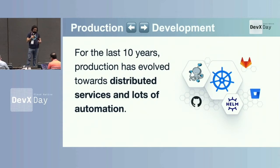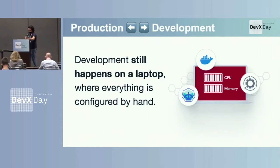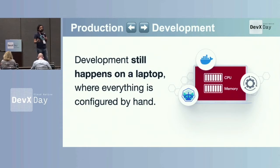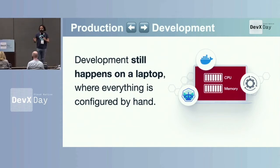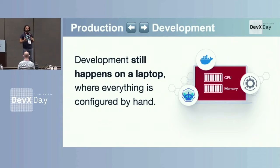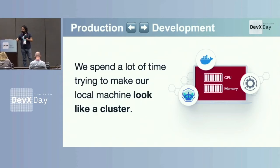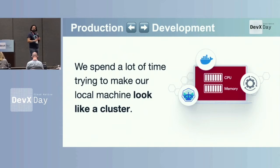However, development still happens on a laptop. As we at Okteto talk to more of our customers, we keep seeing a lot of teams spend a lot of resources trying to make their local machine look like a cluster. This is the approach we've all taken for a long time — Docker Desktop, Kind, K3S, Minikube — but as we heard in previous talks, there are a lot of resources invested here. Your application isn't quite like production, you're using a lot of CPU and memory, your experience becomes sluggish, and you end up with this dev version of your application versus production, which is, in our opinion, problematic.